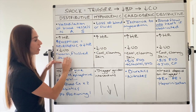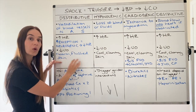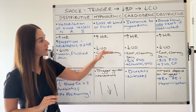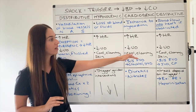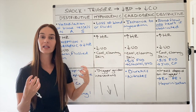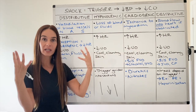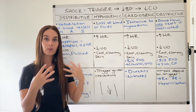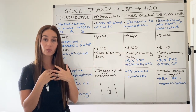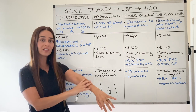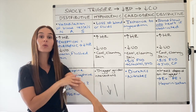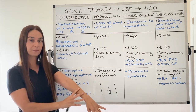The skin is traditionally warm and flushed in distributive shock versus cool and clammy in all other types of shock. The body is trying to cope — shunting blood back to our vital organs — so if you touched their arms in those other shock types, it would be cool and clammy.